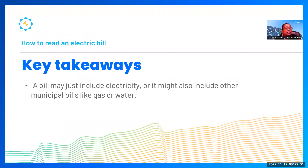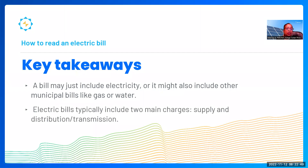A few other key takeaways: some utility bills contain more than just electricity charges — they might also include gas or water charges. That's okay; we still need a clean, clear copy and will just account for the electricity charges on that bill. Electric bills typically include two main charge categories: supply, and distribution or transmission charges. We're looking for those delivery charges and those distribution/transmission charges — which is another reason why we want all pages of the bill.